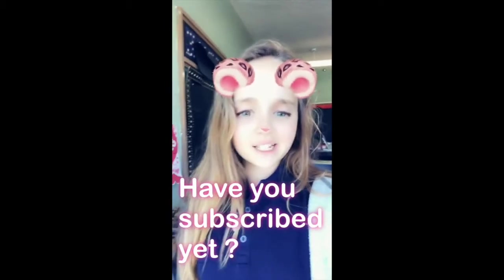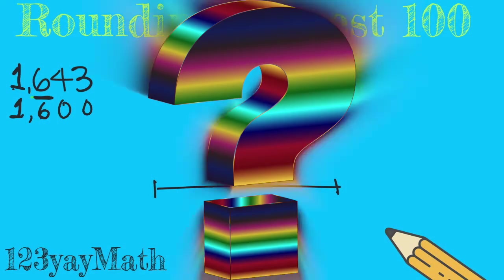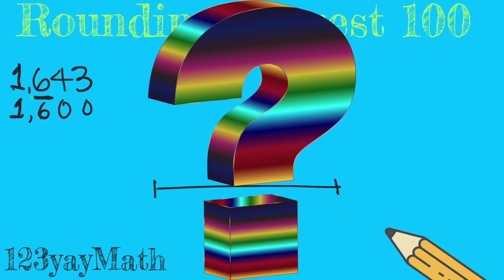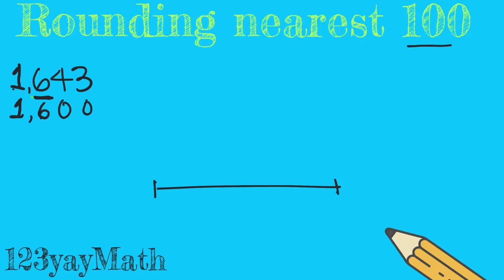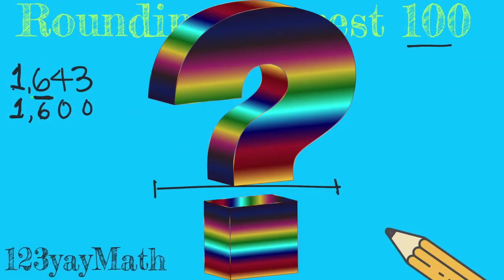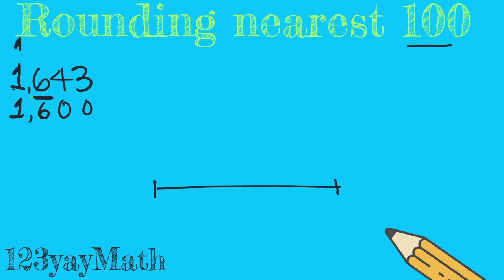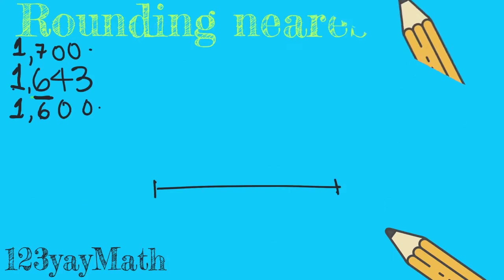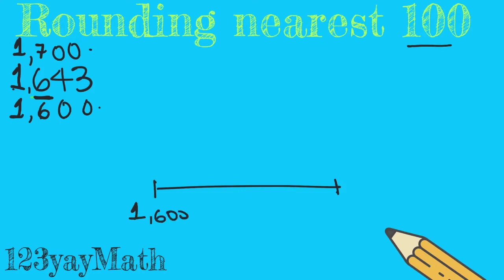Have you subscribed yet? How much am I gonna add? Yes, I'm gonna add 100 more. Do you know how much is 600 plus 100? 700. So it will be 1700. What do I do when I have my two values, my two benchmarks? When am I gonna place them? On my number line so it's 1600 and 1700.